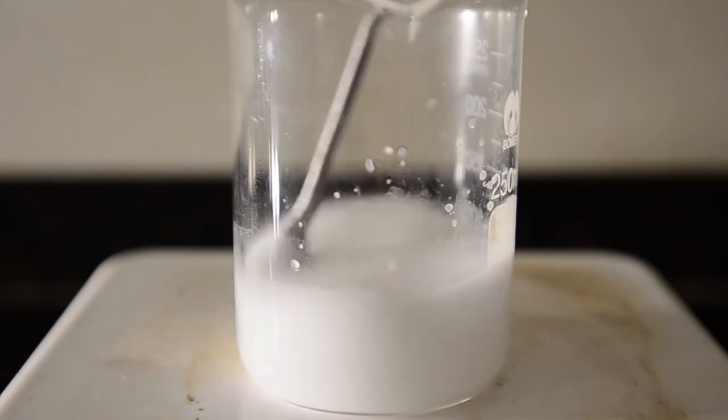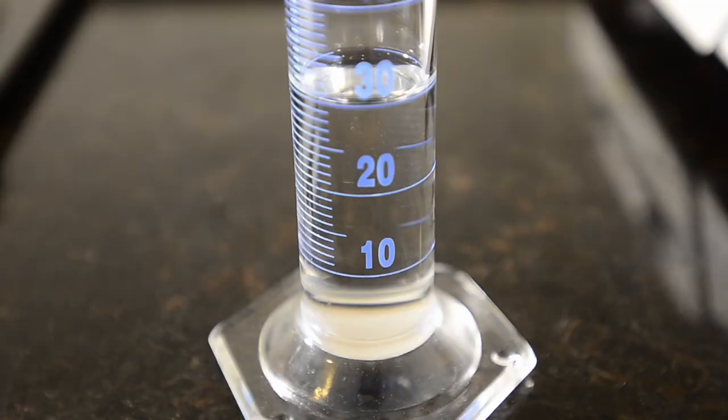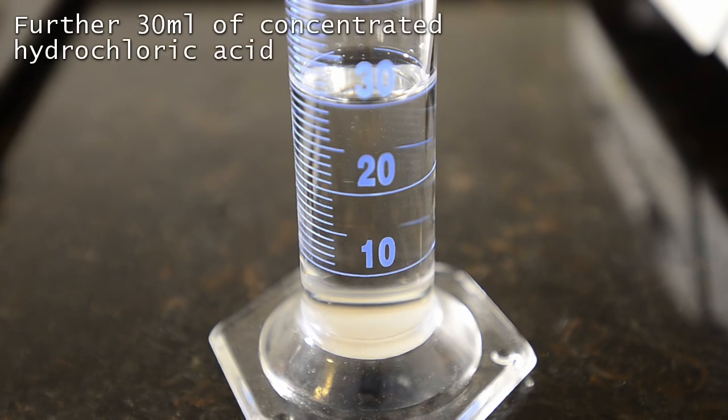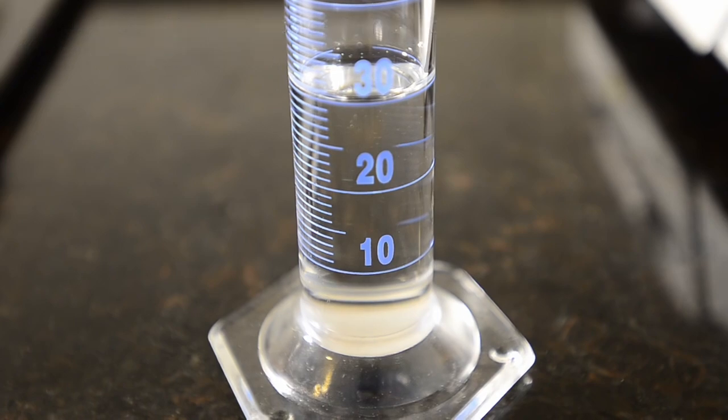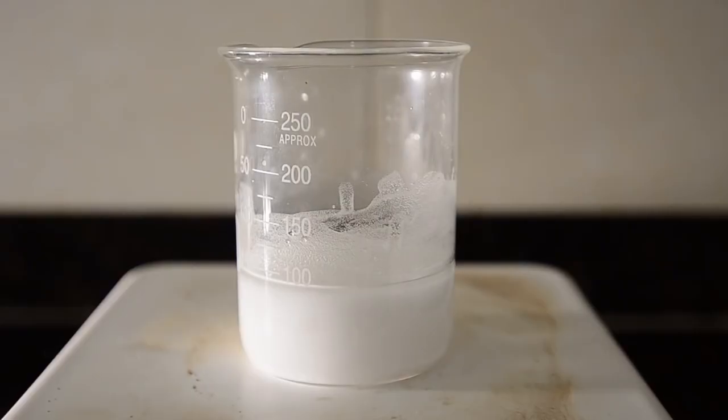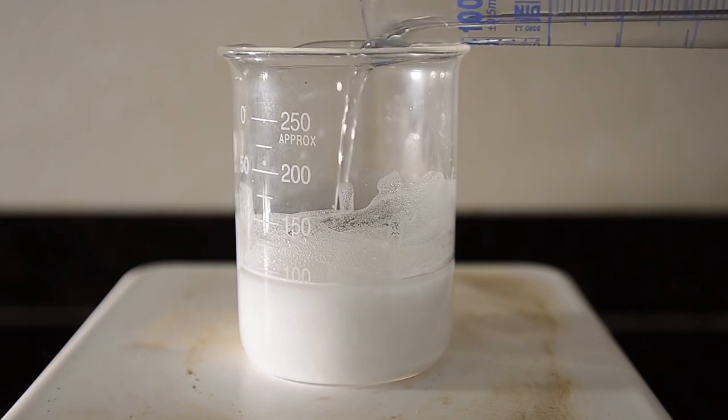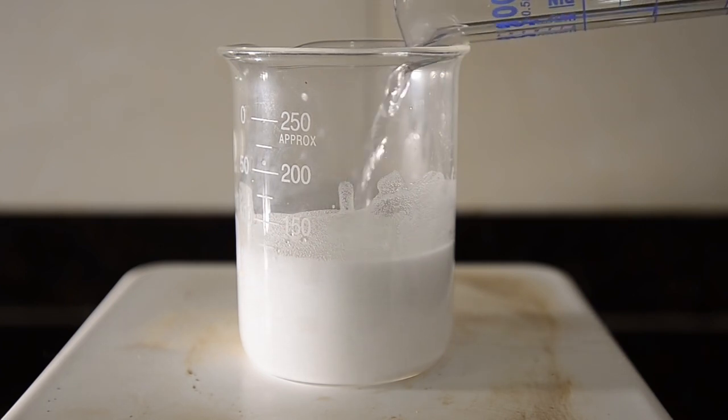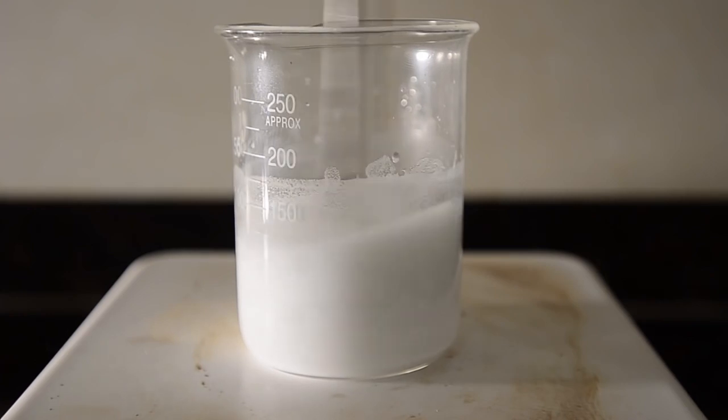We gave the mixture a good stir and heated it on a hot plate. We then prepared a further 30 mils of concentrated hydrochloric acid, which should make up to one mole of HCl per mole of sodium hypophosphate. We added this to the hot mixture and stirred again.